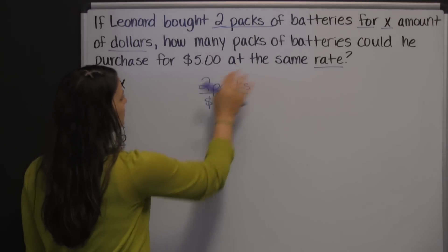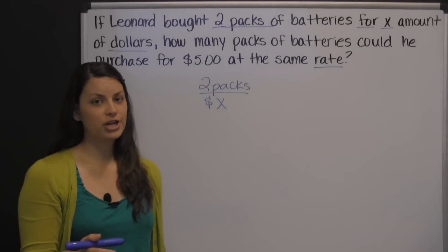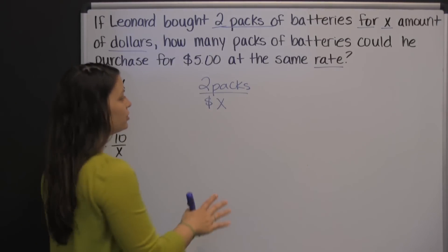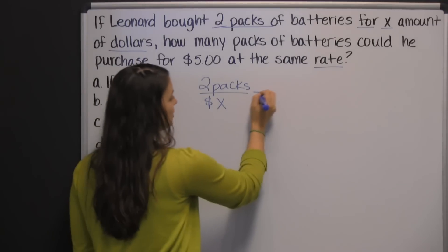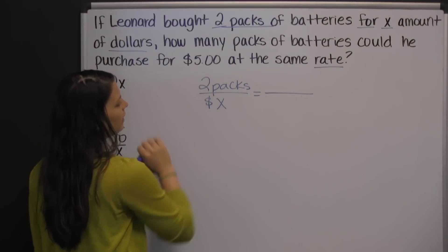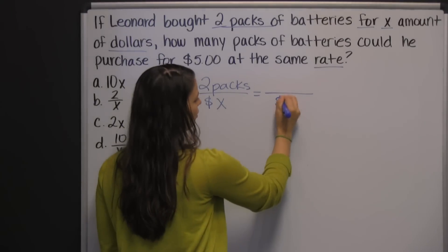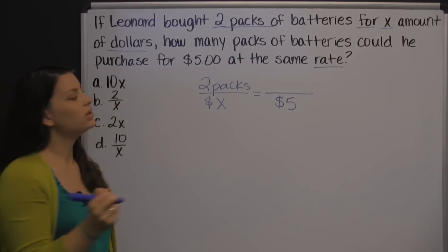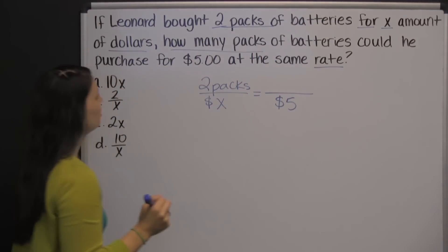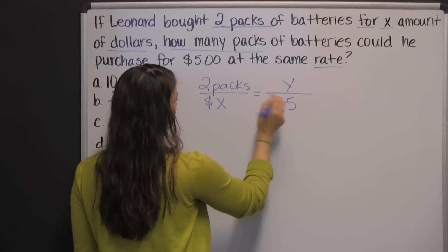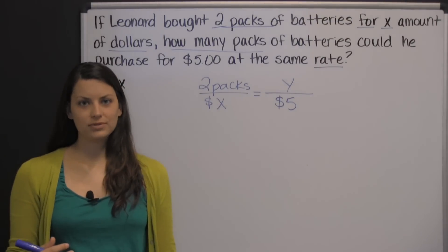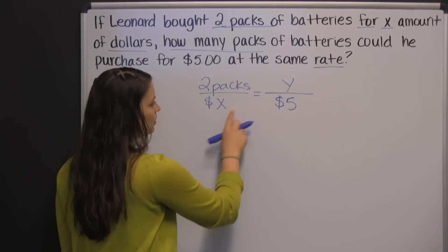The phrase 'at the same rate' tells us we're going to set up a proportion. The key with proportions is to be consistent. Looking at our first ratio, we have packs to dollars, so our second ratio should also be packs to dollars. The information given is five dollars, which goes in the denominator with dollars. What we don't know is how many packs of batteries — that's what we're trying to figure out. Since we've already used x, I'm going to use y. We have two different variables, and we're trying to solve for y this time, not for x.